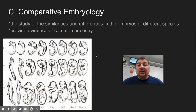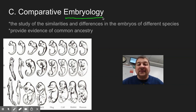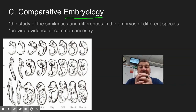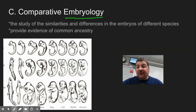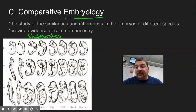The third line of evidence, besides looking at anatomy, is embryology. Remember, an embryo is when sperm meets egg and you get that first clump of cells that starts to grow into the new animal. If we look at embryos of different vertebrates — things that have backbones — we see that they are very, very similar in the early stages of life.